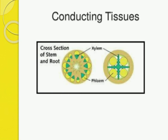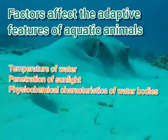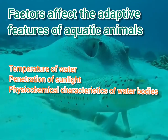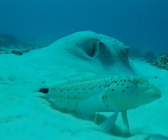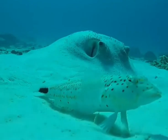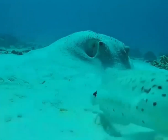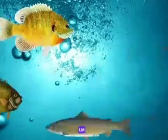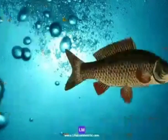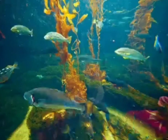In animals, the temperature of water, penetration of sunlight, and physicochemical characteristics of water bodies affect the growth and survival of the biotic community. The morphological, anatomical, and physiological attributes of aquatic plants and animals are different from those of terrestrial plants and animals.